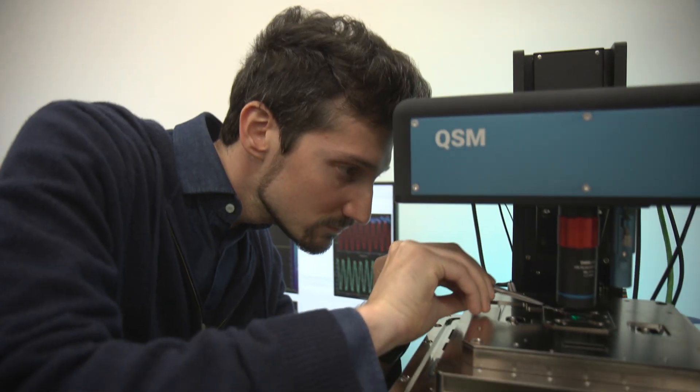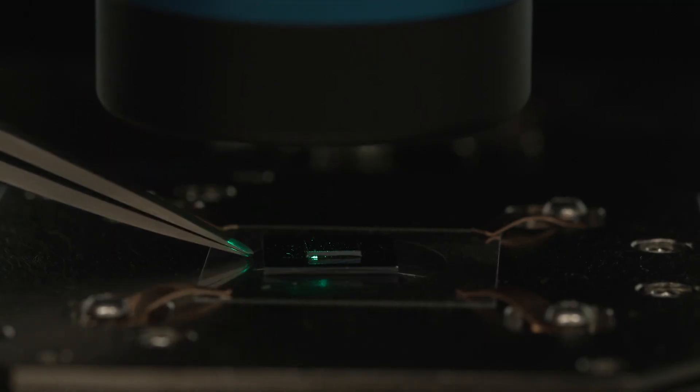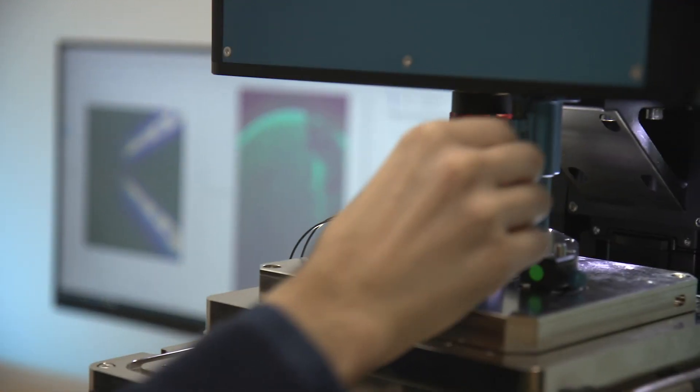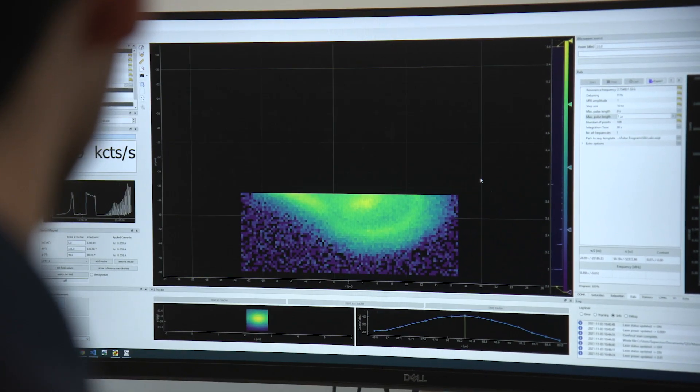One crucial aspect for them is to produce biased magnetic fields, either to optimize the sensor performance or to maybe induce some properties in their samples. The QSM allows you to do so by using a vector electromagnet that can set, ramp, and sweep magnetic fields in an arbitrary direction.